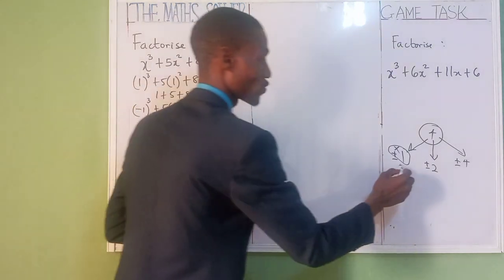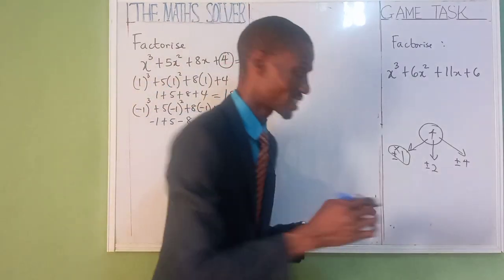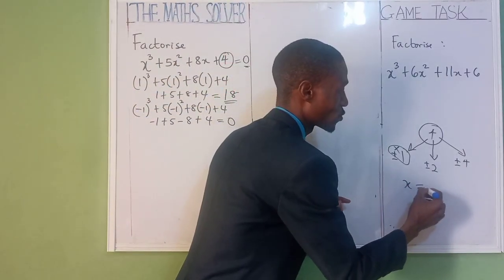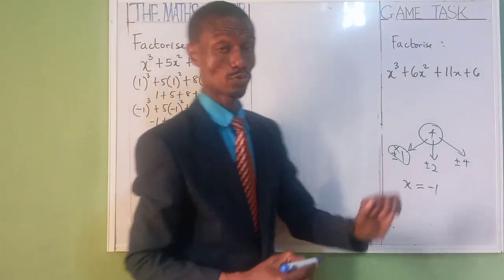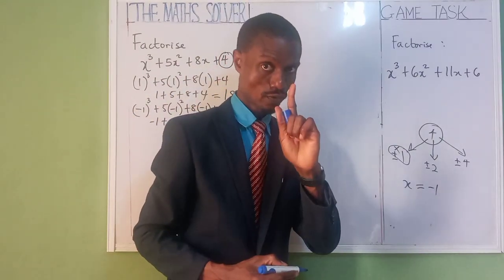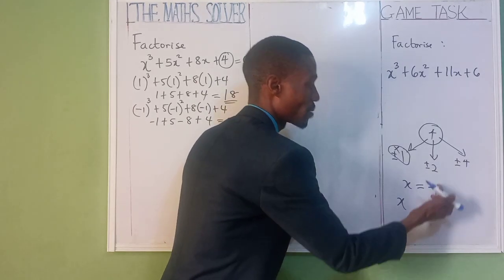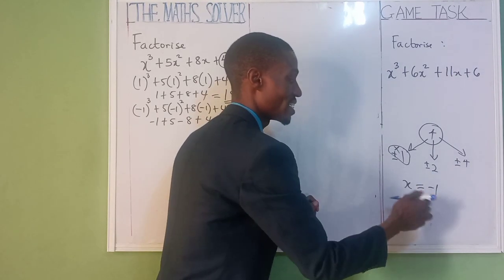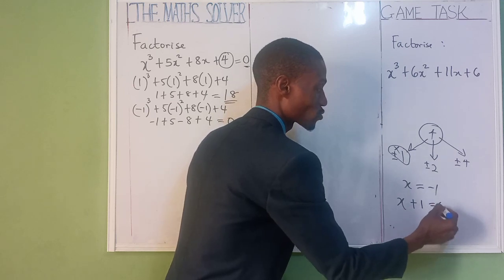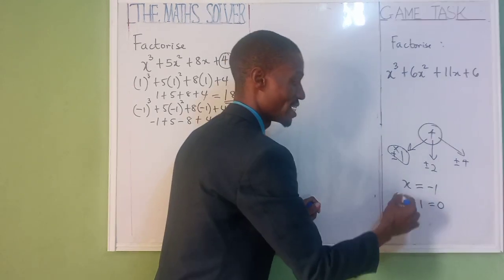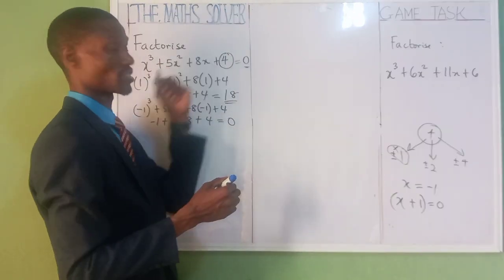It equals 0, so we are going to make use of minus 1. We said x equals minus 1. Because x is what we used, and it equals minus 1, you've gotten your first equation. Bring it here: x plus 1 equals 0. That is one of our answers. We are going to get 3 answers total, and we've gotten 1.